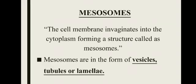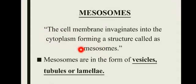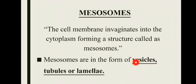اس کے بعد ہمارے پاس mesosomes ہیں۔ Mesosomes جو ہوتی ہیں یہ actually plasma membrane کی infolding ہوتی ہیں۔ Cell membrane یعنی plasma membrane cytoplasm کی طرف invaginate کرتی ہے اور ایک structure بناتی ہے جسے mesosomes کہتے ہیں۔ Mesosomes تین forms میں exist کرتے ہیں: اگر vesicle یا circle کی فارم میں invaginate ہوں تو vesicle mesosomes، tube کی فارم میں ہوں تو tubular mesosomes کہتے ہیں۔